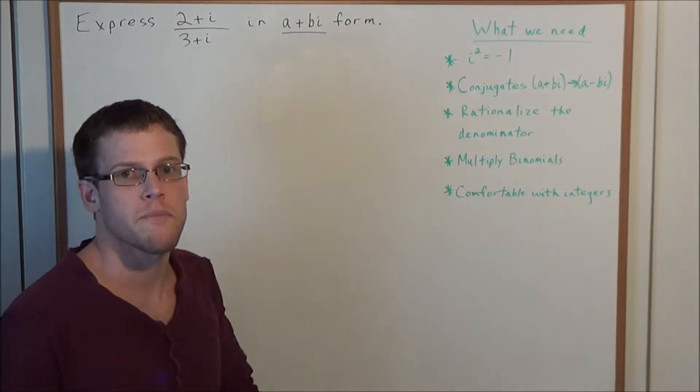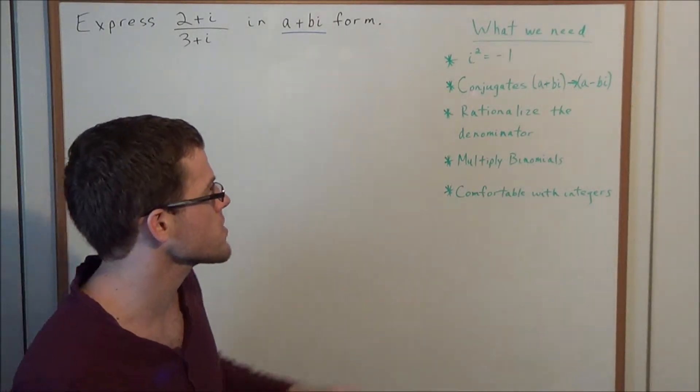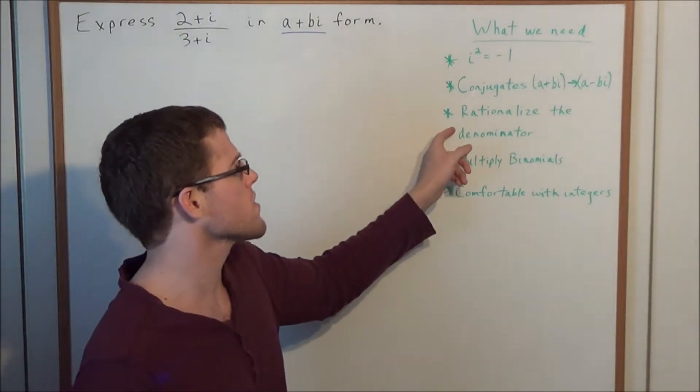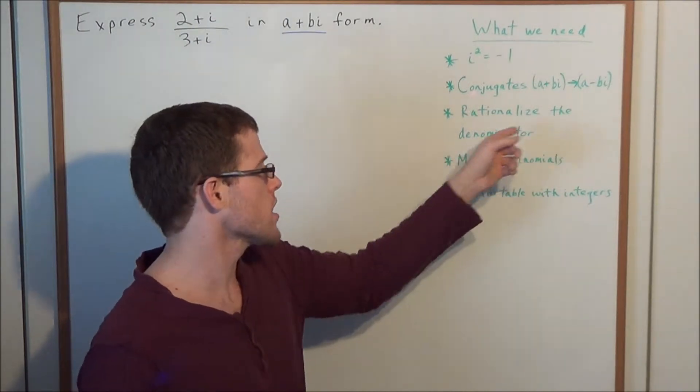Next, we need to know what conjugates are. In particular, the conjugate of a complex number a plus bi is a minus bi. Next, we need to know how to rationalize the denominator.